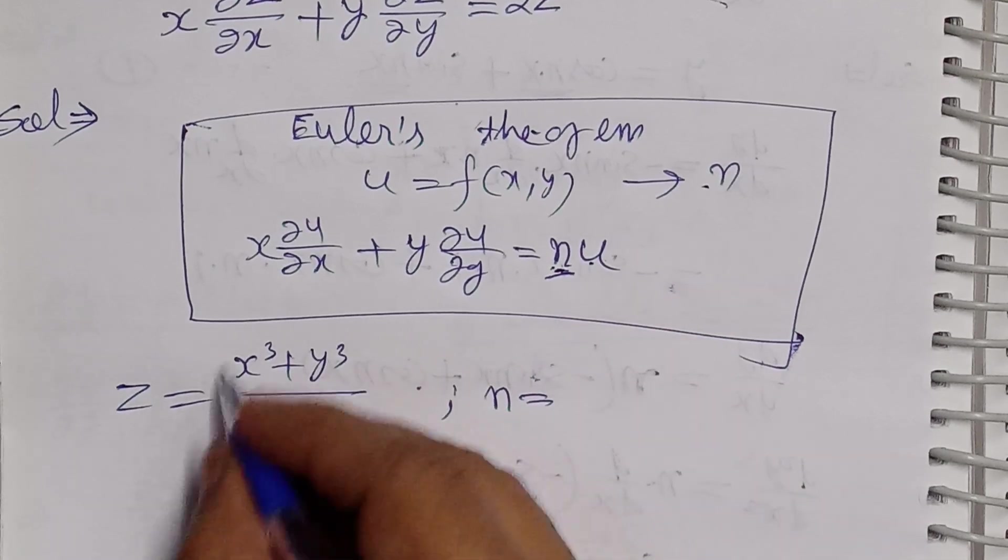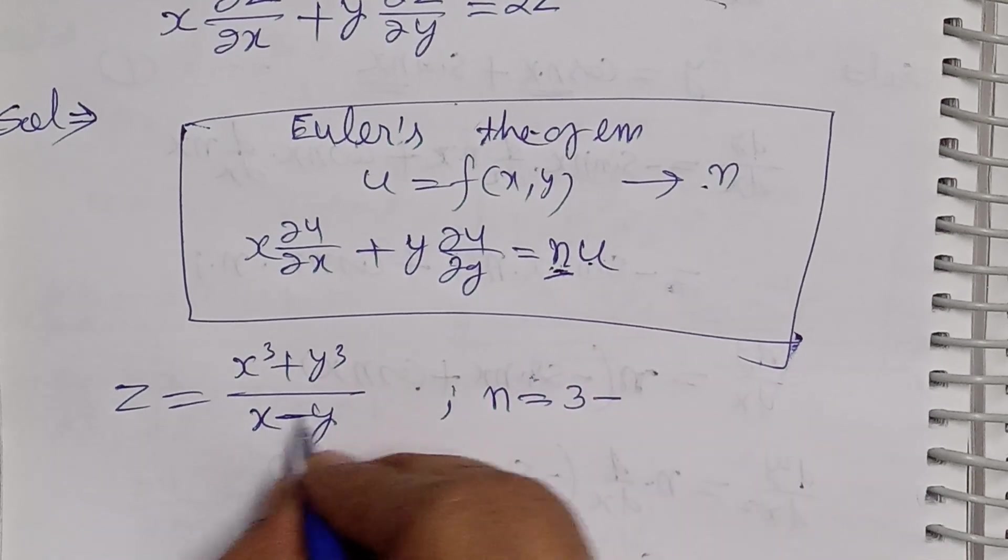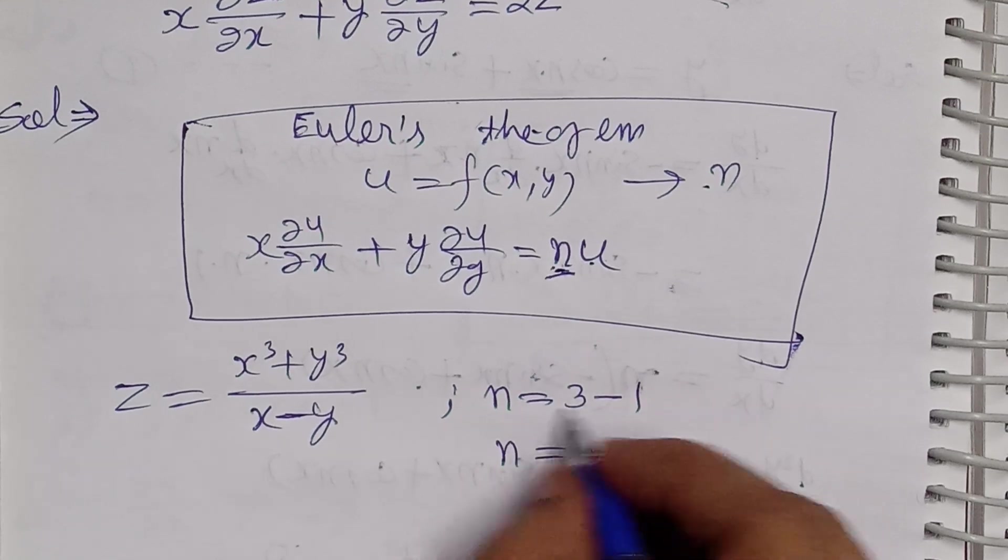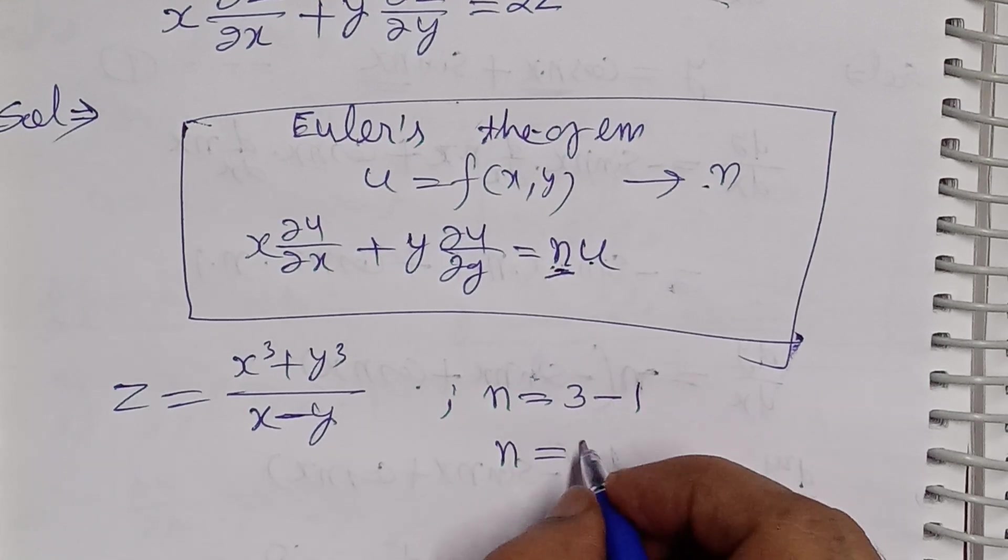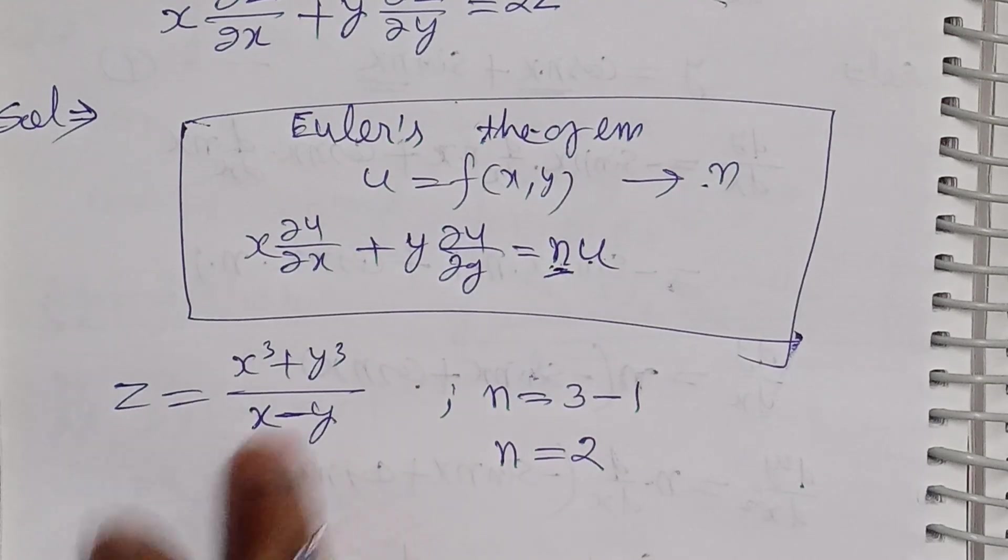To find n, we take the degree of the numerator and subtract the degree of the denominator. This way you can find the degree, which gives us the value of n.